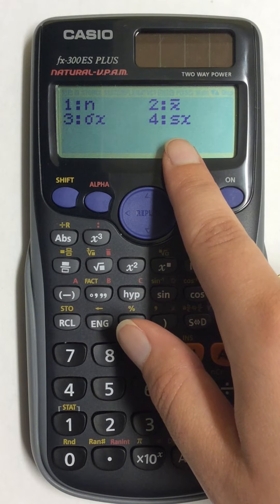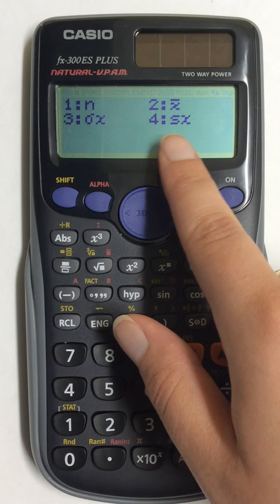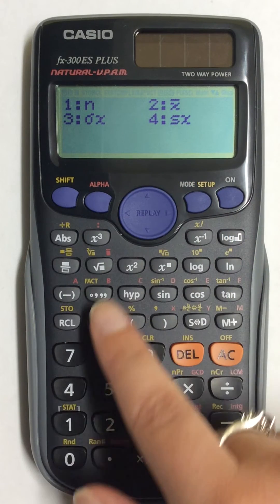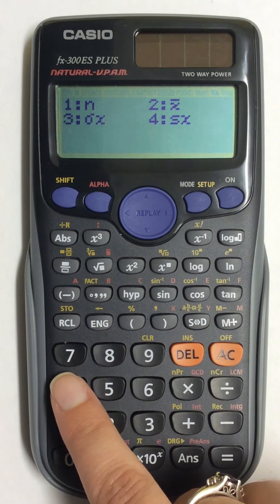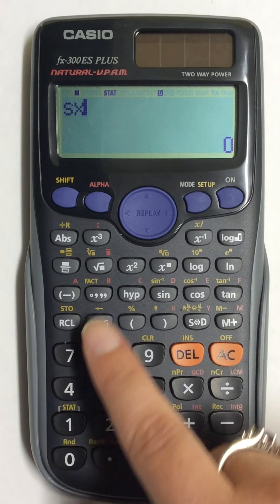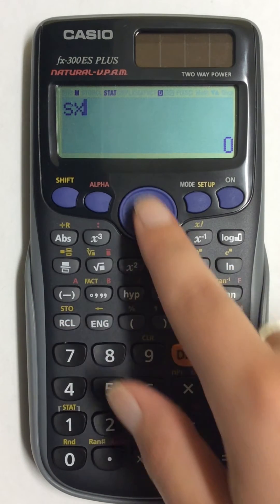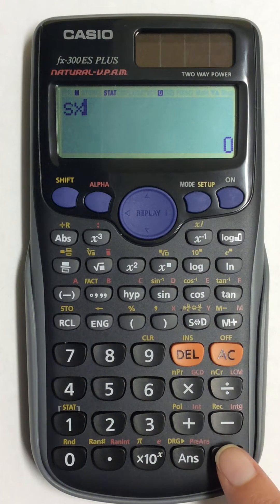So if I'm trying to find standard deviation and say I wanted to find it for sample, I would come down here and choose number 4. It's now blinking on the screen, so I have to press the equals button.